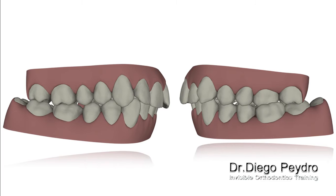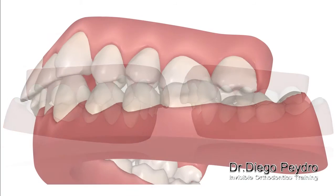We have vertical problems because we have a deep bite, we have a transversal problem with issues in the shape of the upper and lower arch, and we have sagittal problems with the Class 2 that we see in this patient.